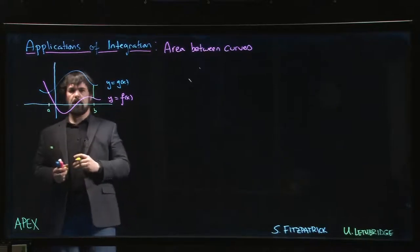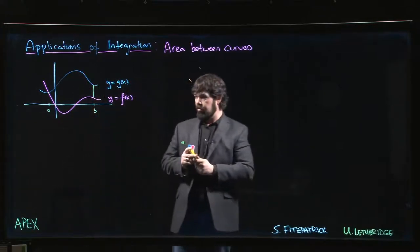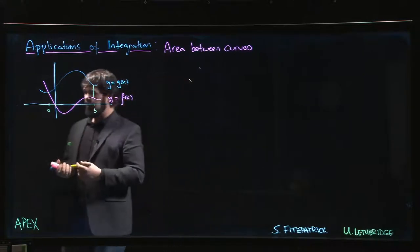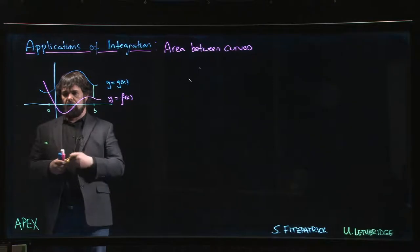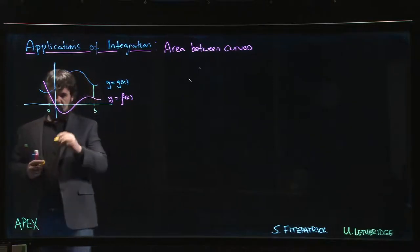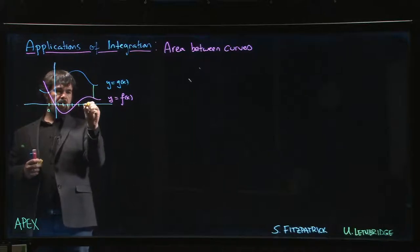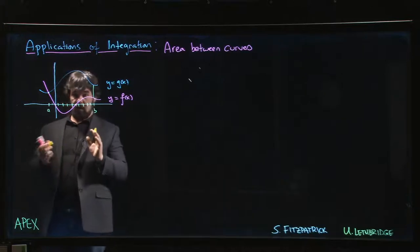You can see that there's this area enclosed between the two curves if we go between a and b, and we want to figure out what that area is. We figure this out using the exact same approach that we used last time - you take this interval from a to b, you partition, and you approximate the area using rectangles. We stick to what we know.